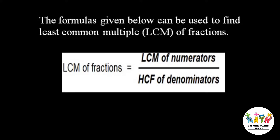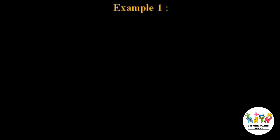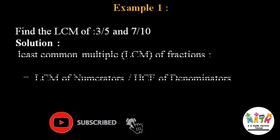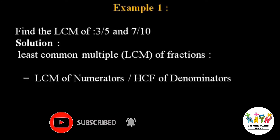A fraction is in the form P by Q. So let's take the first example: find the LCM of 3/5 and 7/10. We have to use the formula — the least common multiple of a fraction — for these two terms 3/5 and 7/10.